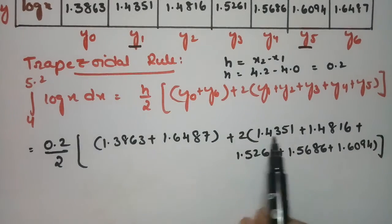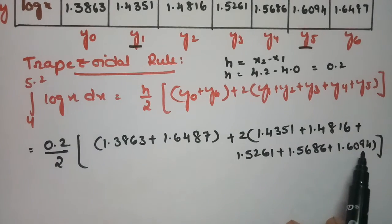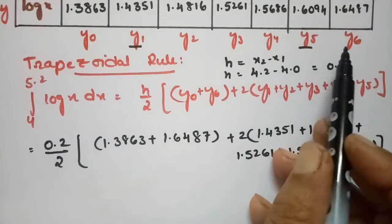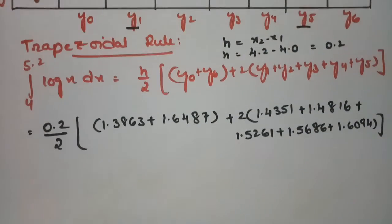Next value here is 1.5686 plus this is 1.6094. See here this is 1, 2, 3, 4, 5, 6, 7. So we have 7 values and I have substituted here.